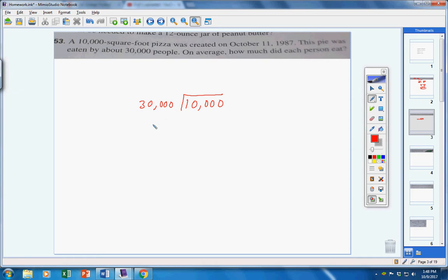If you type that into your calculator, 10,000 divided by 30,000, you're going to get one-third, or 0.3 repeating. What does that mean? It means you took 10,000 square feet of pizza and divided it up into 30,000 pieces. So, you get 0.3 of a square foot. A square foot is one foot by one foot by one foot by one foot. Now, divide that in thirds. And that's what each person got.